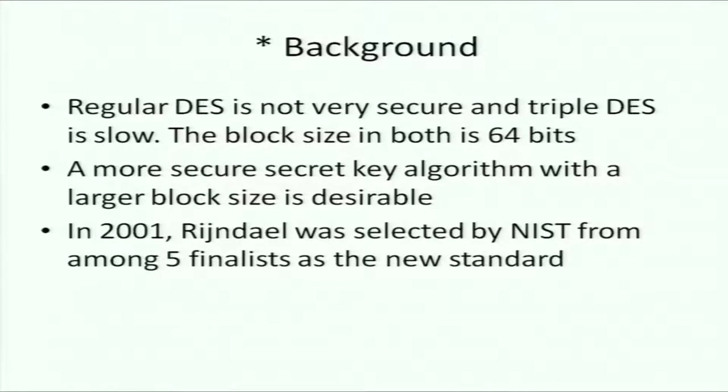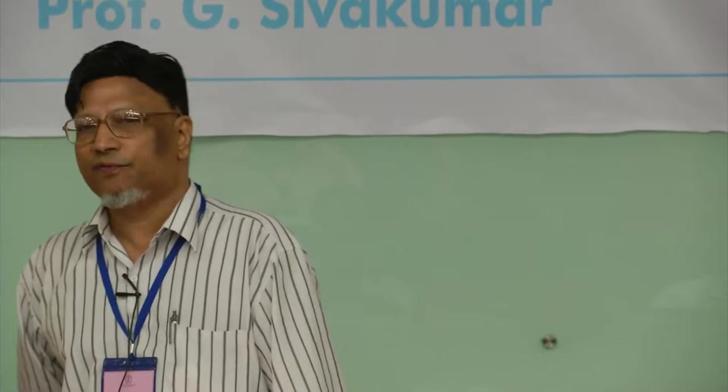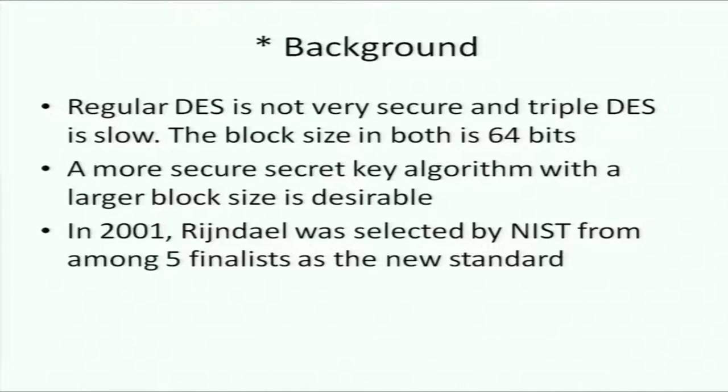There were 15 proposals in the semi-final list, which were reduced to five. All these proposals were vigorously debated in various conferences from people around the world. The good points and bad points were discussed, and ultimately five were selected, and from the five only one winner — AES — was chosen in 2001. That's the standard supported today for most applications using secret key cryptography.